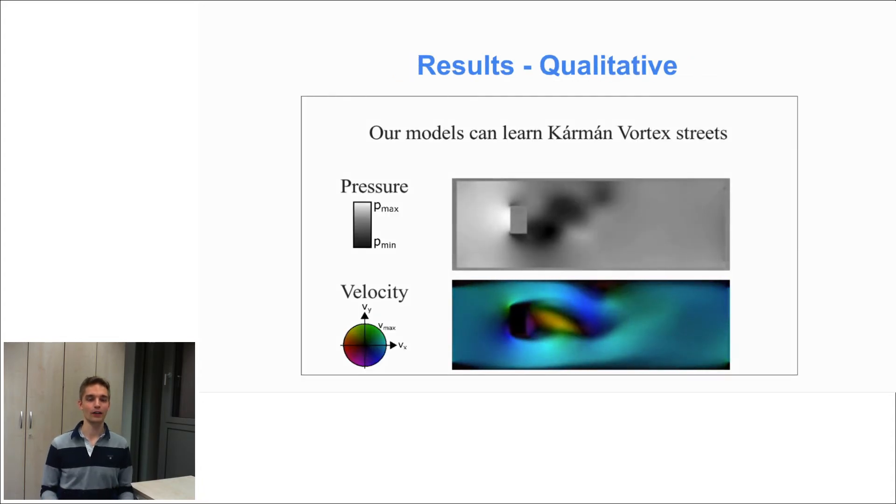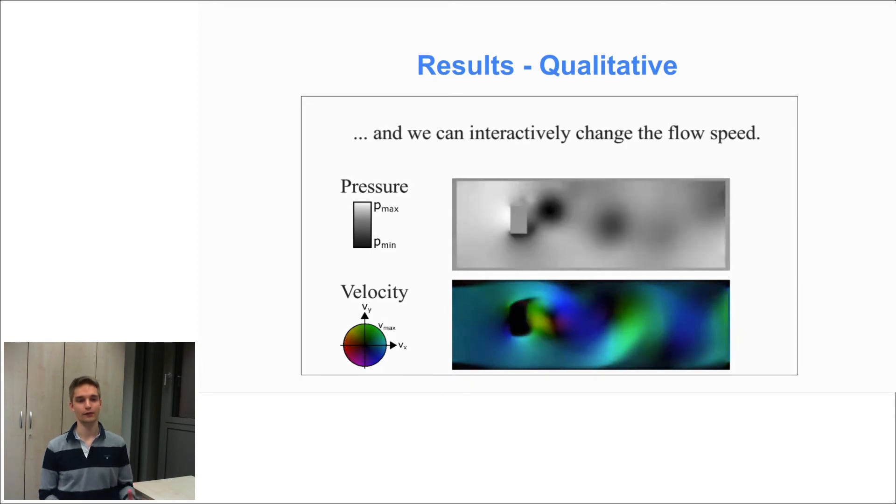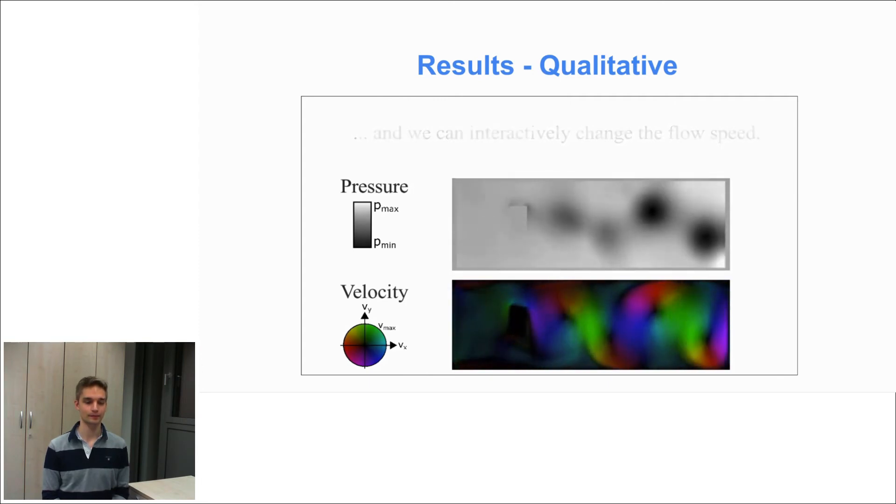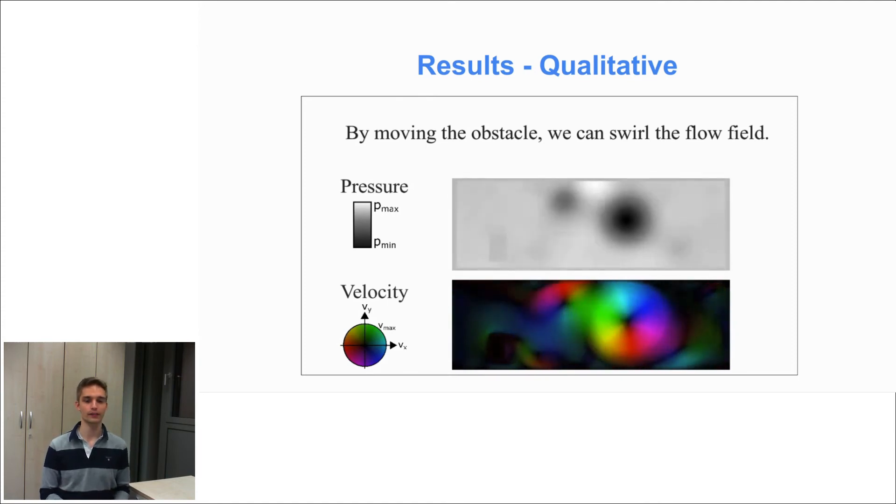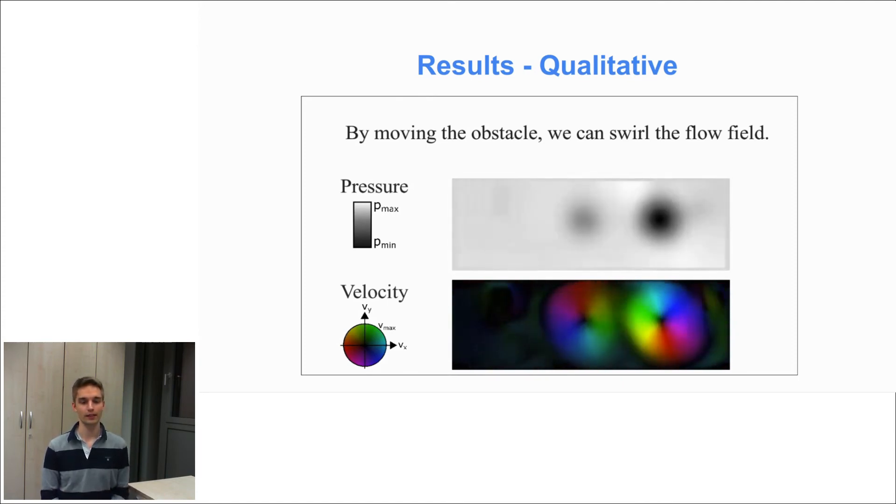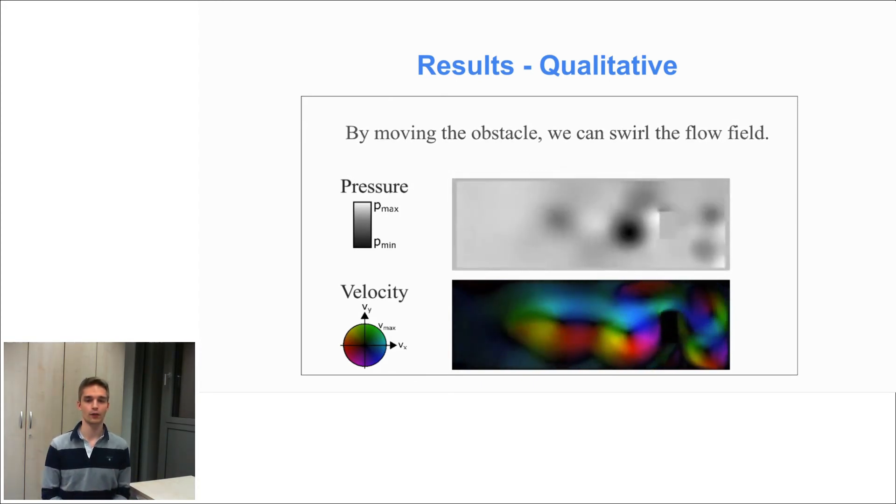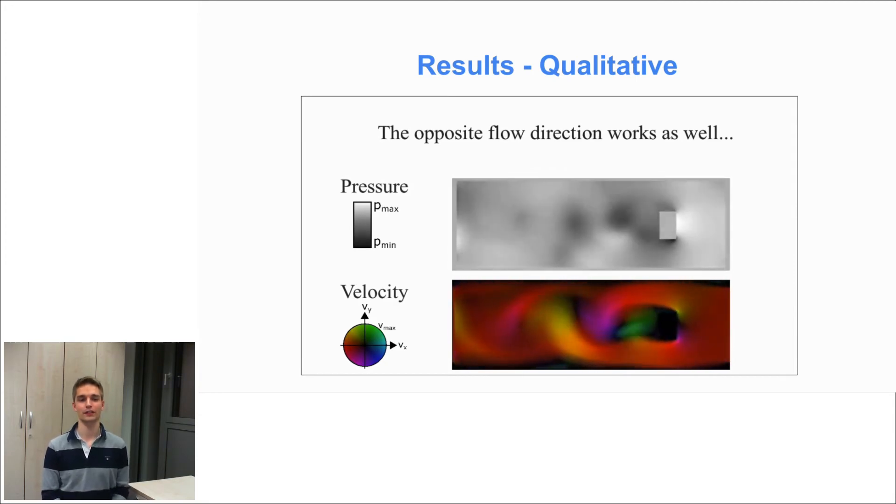Okay, now I'll show you some qualitative results. And as you can see here, our models successfully learned the common vortex streets. All of the simulations were done in real time. We can also interactively change the flow velocity. And the opposite flow direction works just as well.